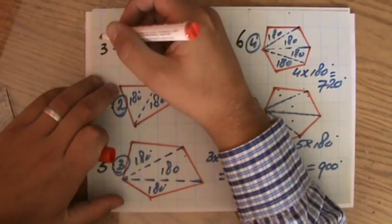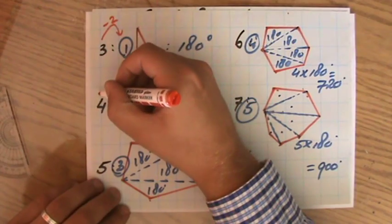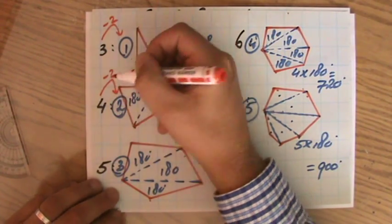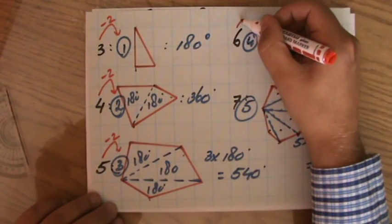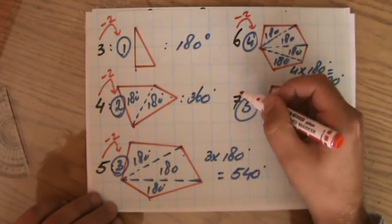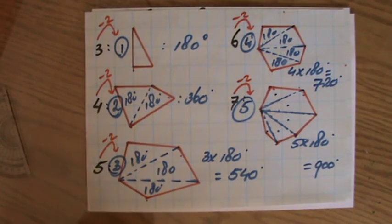What is the pattern here? Does anybody see it? It's every time the amount of sides take away two times 180 degrees. Every time the amount of sides, but then two less triangles I can create. Every time I can create two triangles less than the amount of sides of the polygon.